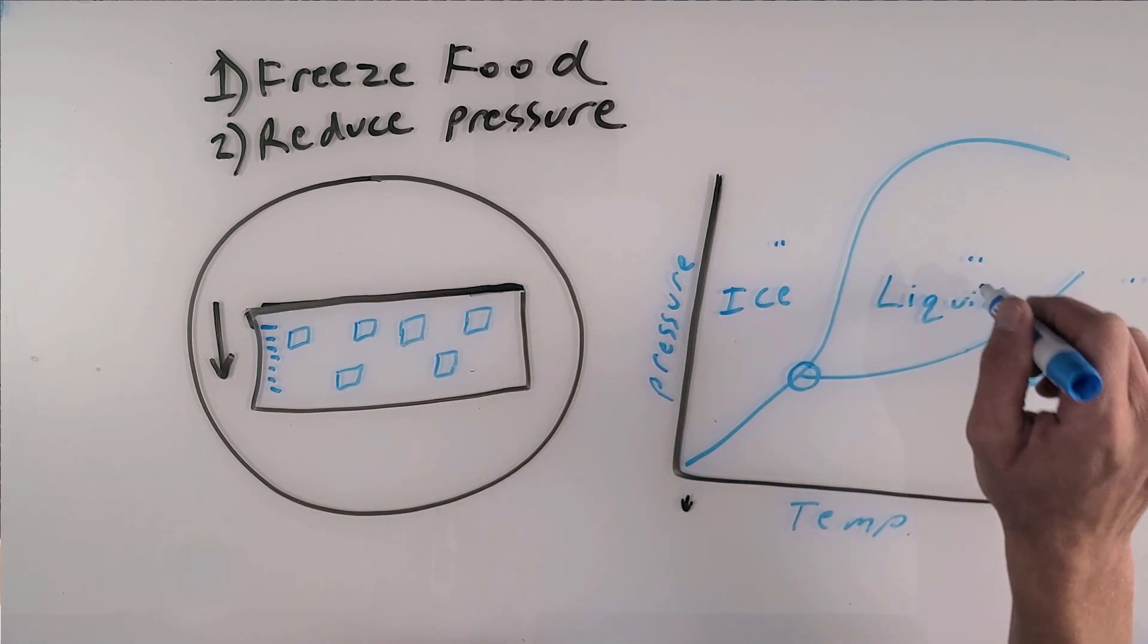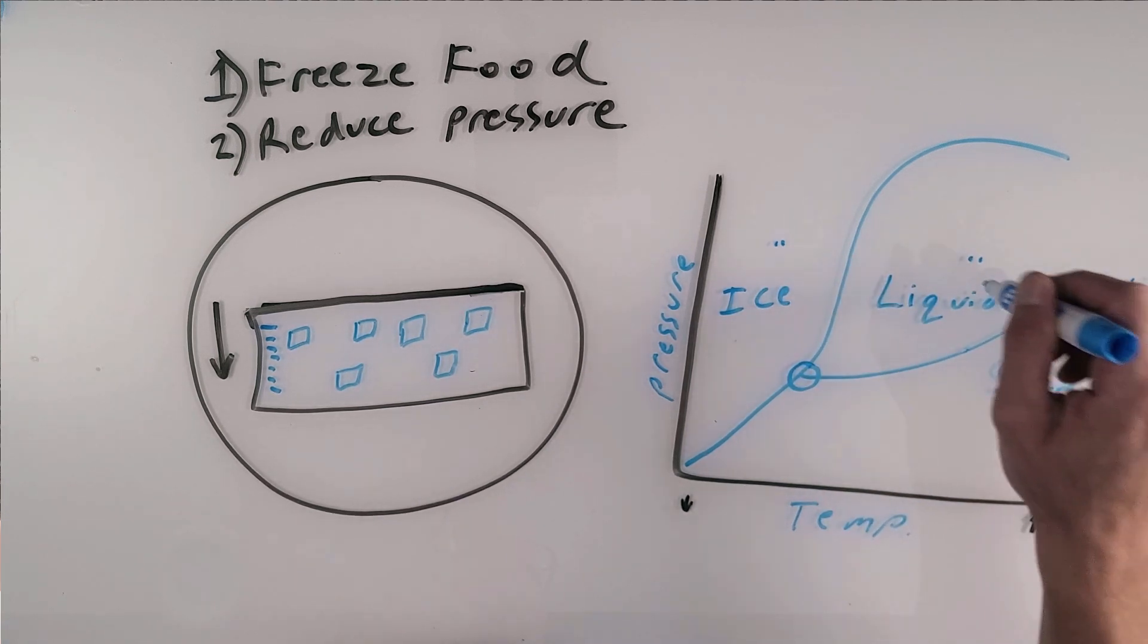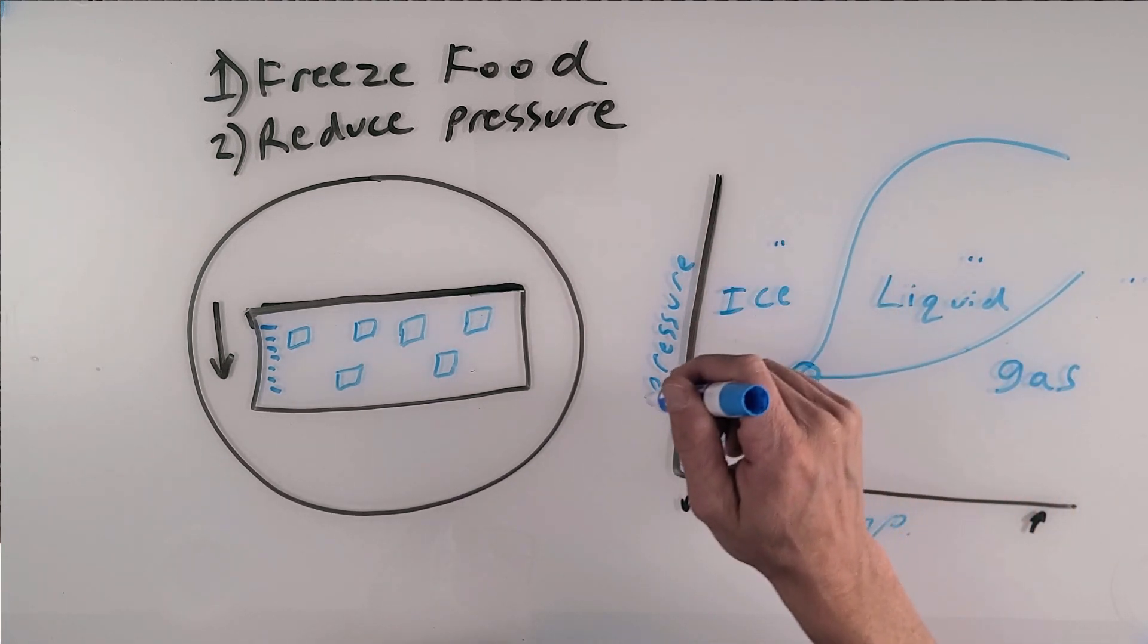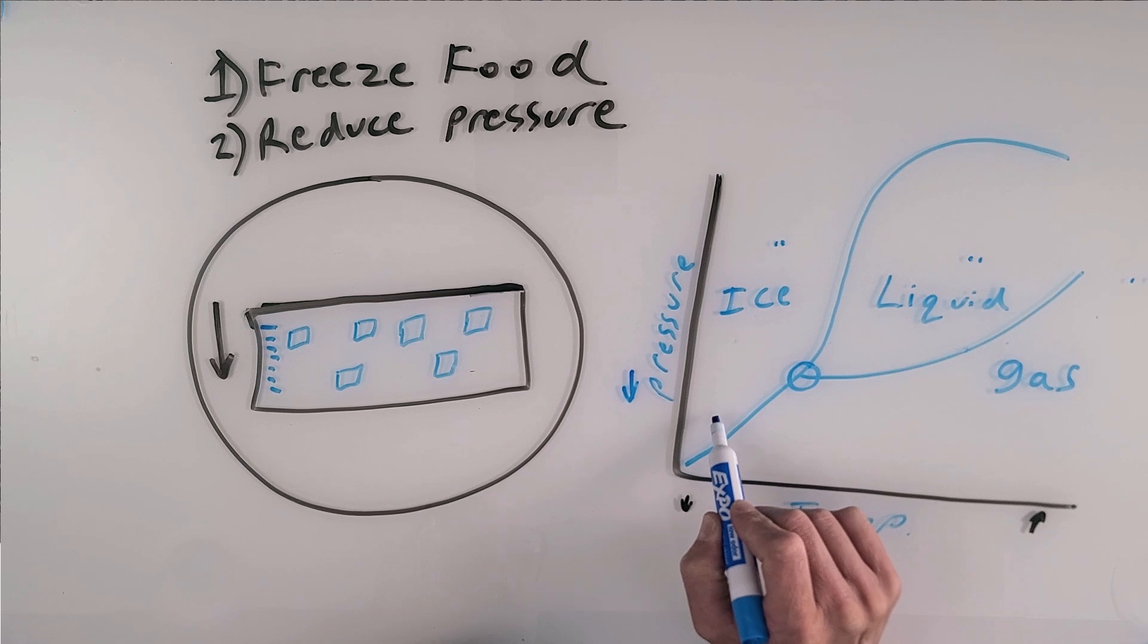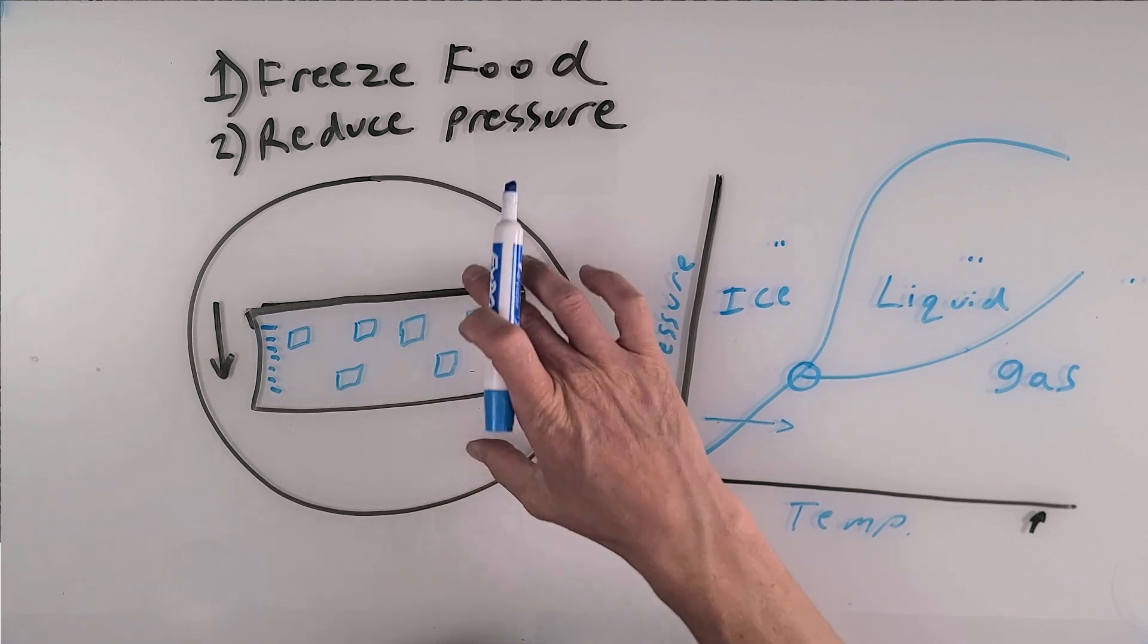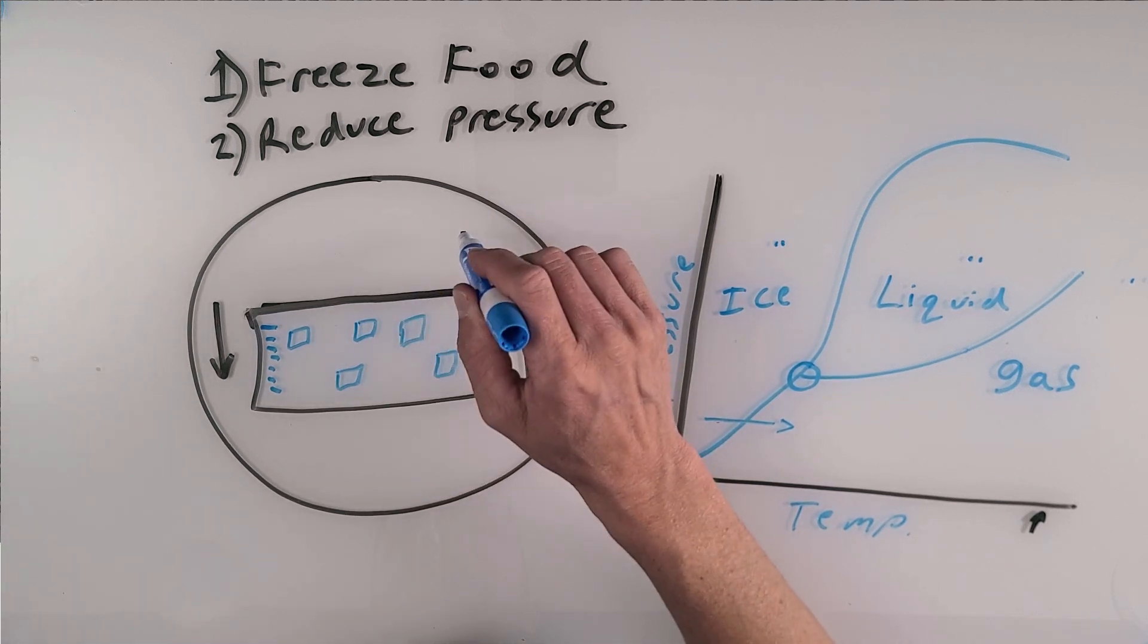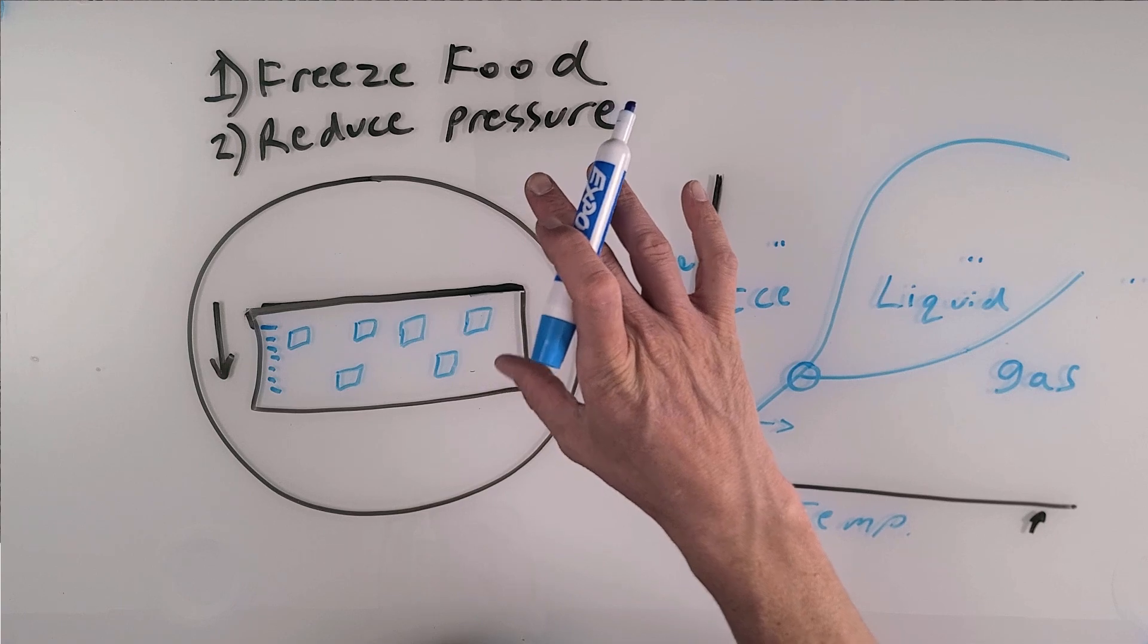Generally, at normal pressure, you cannot skip the liquid phase. You have to go from ice to liquid to gas or from gas to liquid to ice. But if we reduce the pressure enough over here, it can actually go from the solid phase straight to the gaseous phase. And we don't have to pass through the liquid phase. And that's what you're trying to do inside this food. You're trying to get ice to turn straight into gas without passing through the liquid phase.